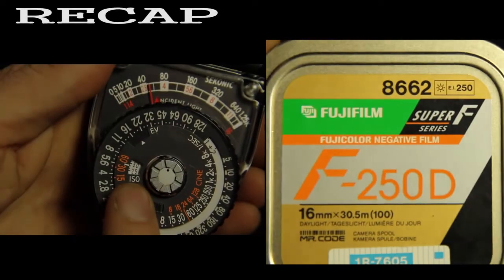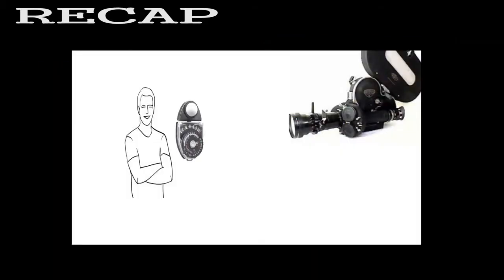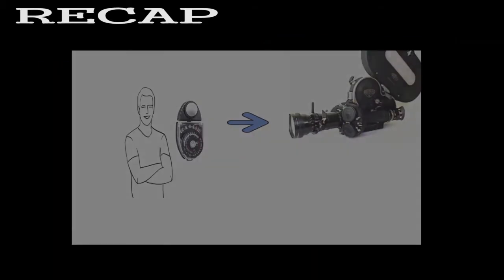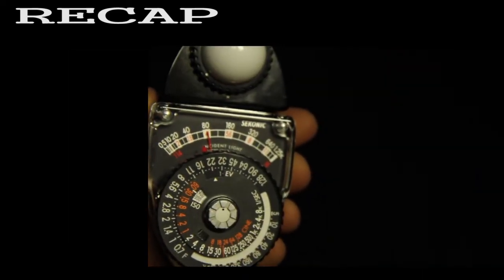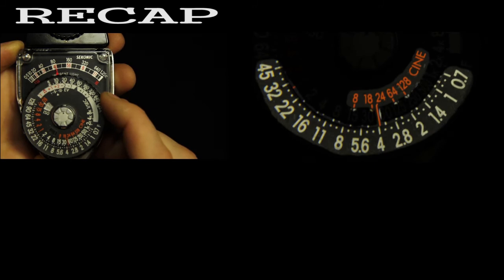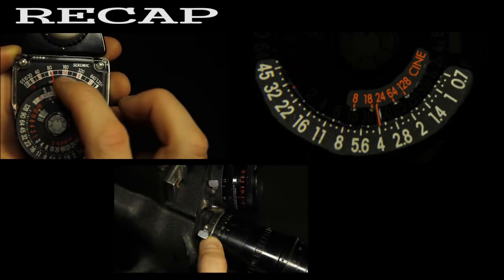Let's recap. First, match the ISO settings on the light meter to the stock of your film. Second, point the Lumisphere in the direction of the camera from the subject's position. Third, press in the silver button and release to take a reading. Fourth, turn the dial on the light meter to match the foot candle measurement. Last, match your desired frame rate to the meter's recommended aperture settings and set your camera according to the number on the meter.